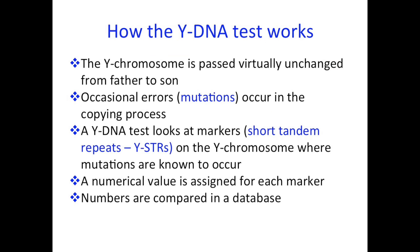The test works on the principle that the Y chromosome is passed from father to son virtually unchanged, but every now and then a small mutation occurs in the copying process — like little typos. Once those mutations occur, they get passed on to the next generation. The DNA test looks at particular markers on the Y chromosome where these mutations are known to occur. Each marker gets a number, and all your numbers go into a big database where they are compared. It's a bit like a lottery, except you don't have to keep paying every week — you just stay in there.